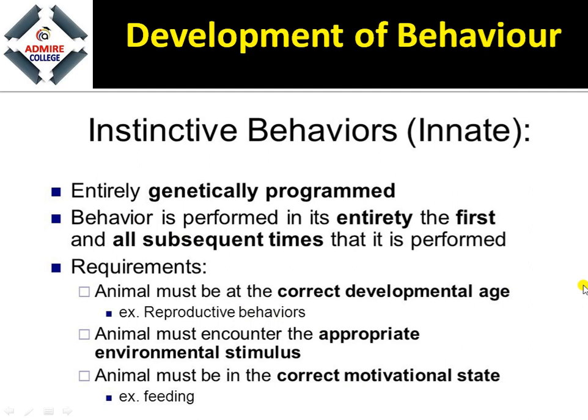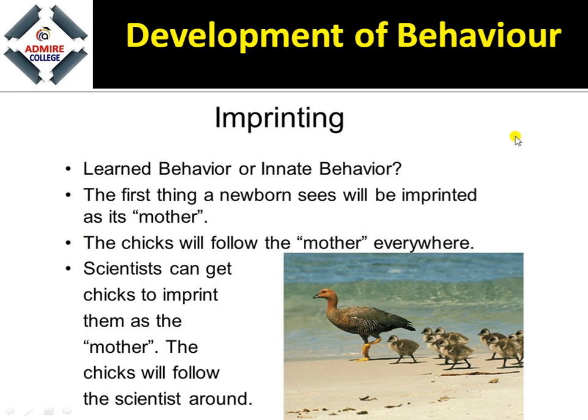Next is imprinting — a type of behavior in which an organism imprints a learning behavior or innate behavior onto its brain. The first thing a newborn sees will be imprinted as its mother. This imprinting behavior is mostly found in birds, in which birds see a moving object and consider it their mother. That is imprinting.